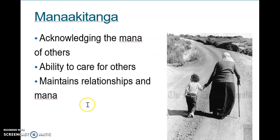The next value upheld in Māori worldview is manaakitanga. This is about acknowledging the mana of others. It includes our ability to care for others and maintain relationships and mana. By manaakitanga it means that we have respect and we acknowledge what other people bring to a relationship, and because we do that, it helps facilitate the relationships we have with each other and with other people.